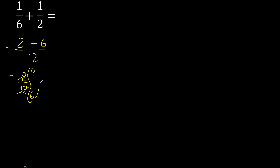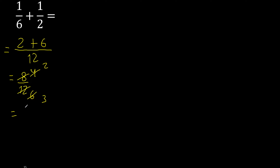These can be divided by 2 again: divided by 2 is 2, divided by 2 is 3. Cannot be divided by the same number any further, therefore finish.